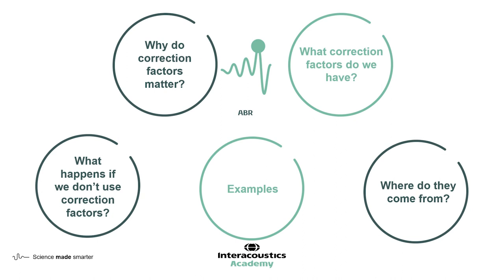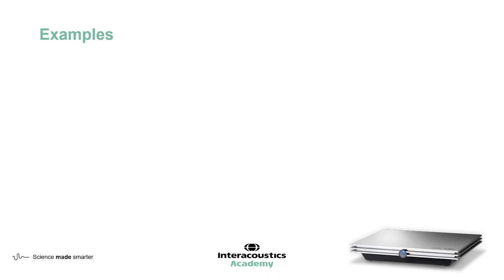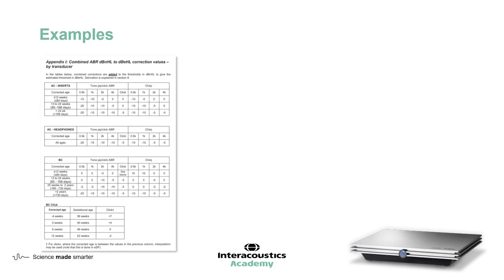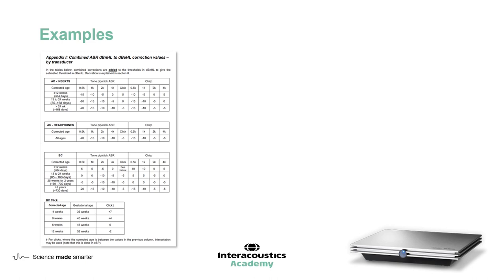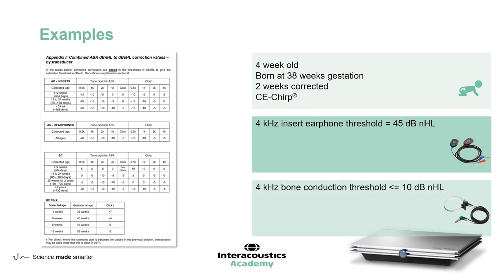So we've looked at how we get to our final combined correction factors. Now let's look at some examples of how we apply these correction factors in clinical practice. First of all, we need our combined correction factor document — and the good news is you don't have to calculate the ABR offset and the transducer age-related combinations. This document has done it all for you. All you need to do is apply these correction values to your nHL value. In this case, we've tested a four-week-old born at 38 weeks gestation, making them two weeks corrected. We've been testing using CE chirps. Using insert earphones, we recorded an nHL threshold of 45 dB. Because there was a hearing loss present, we've also tested four kilohertz bone conduction, and we've managed to record down to less than or equal to 10 dB nHL.